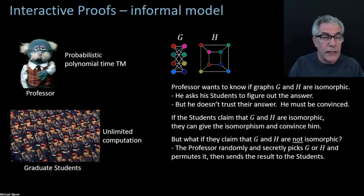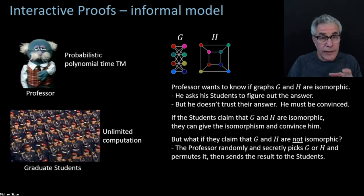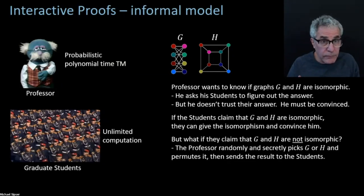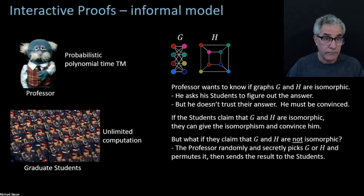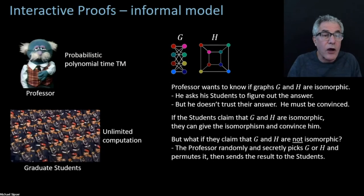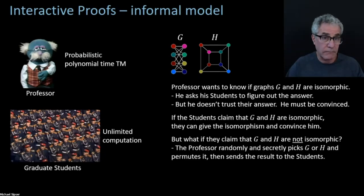If the graphs were really not isomorphic, the students can check whether that randomly scrambled graph is isomorphic to either G or to H — it's going to be isomorphic to one or the other. So the students can figure it out and say 'you picked G' or 'you picked H,' as the case may be. But if the graphs were isomorphic, then that scrambled version of G or H could equally well have come from either of them, and the students would have no way of knowing which one the professor picked.